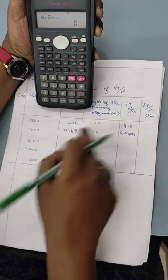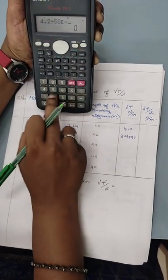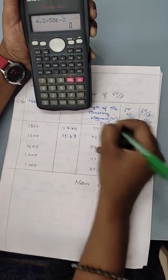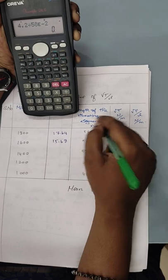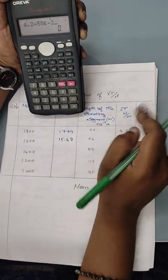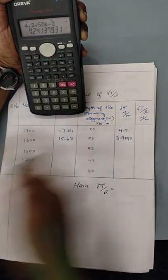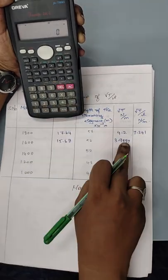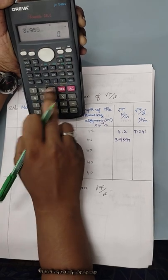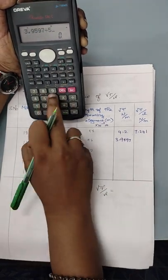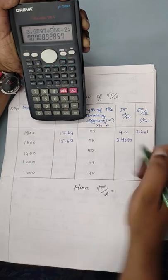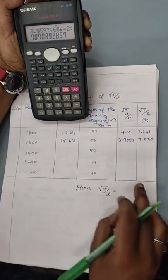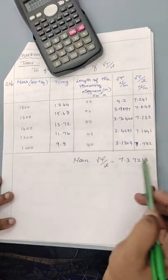Define for root T by L, 4.2 divided by L value is 58 exponential of minus 2. Why, we are measuring it with the length, so the unit is going to be 10 to the power minus 2 meter. So 58 into 10 to the power minus 2 gives out 7.241. So likewise for this, 3.9597 divided by 56 exponential of minus 2, 7.0708. We will do the rest.